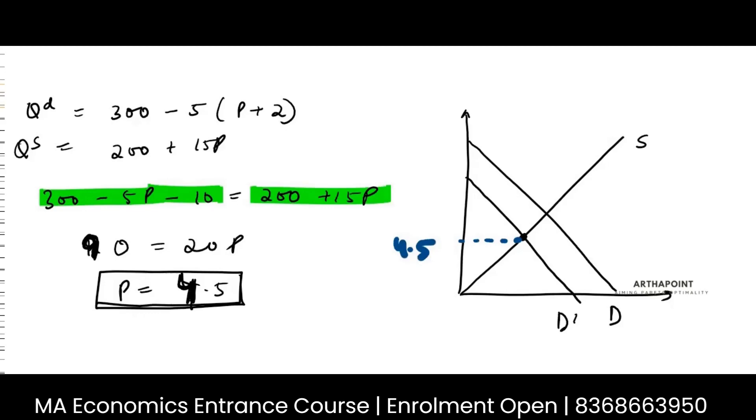But this intersection only gives me what is the net price net of taxes, to get back the price that the consumer will pay. Because consumer paid P plus 2. So this is P.